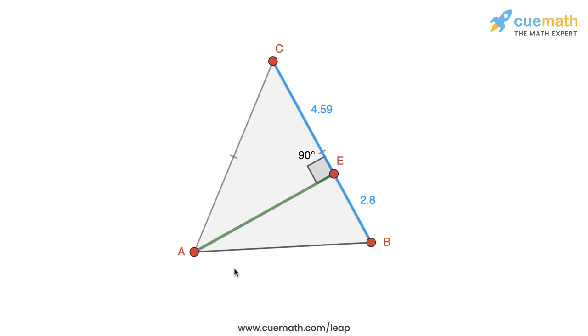But on the other hand, if we draw the altitude from C to the opposite side AB to get this segment CD which is perpendicular to AB, we can see that CD divides AB into two equal parts AD and BD. In fact, right now AD has a length of 3.21 and BD also has a length of 3.21.